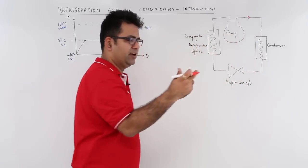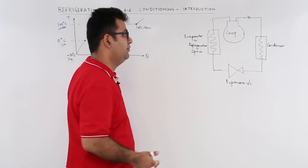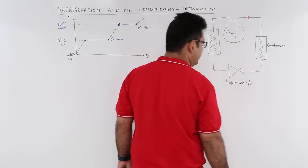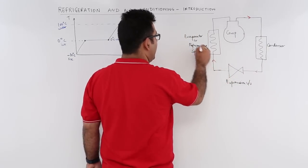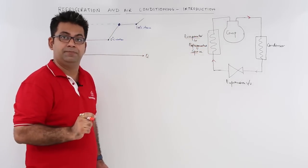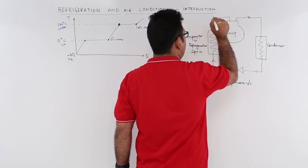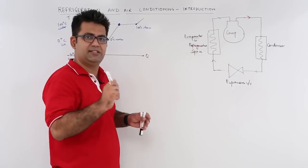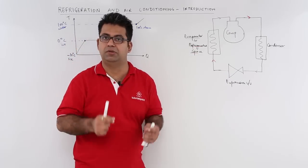The individual working and uses of these components we will discuss in a bit. From the condenser, the refrigerant goes into the expansion valve, and then from the expansion valve it goes into the evaporator or the refrigerated space, and then from there it goes back into the compressor. This is a very simplistic view of how a refrigeration circuit looks like.